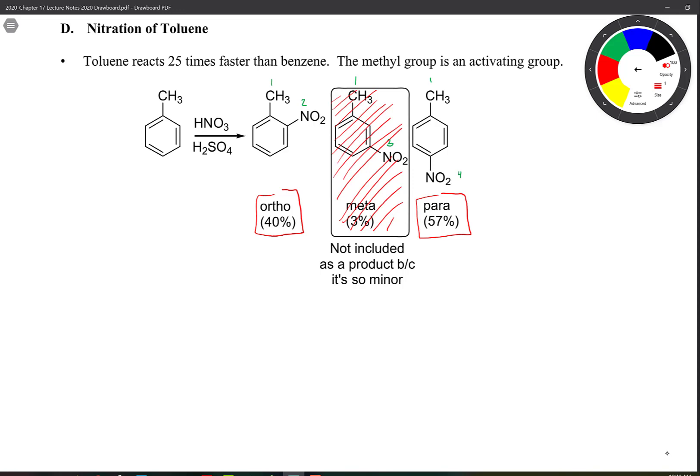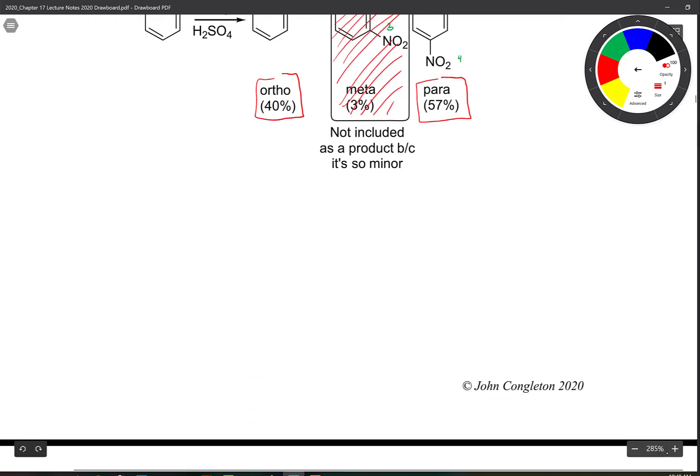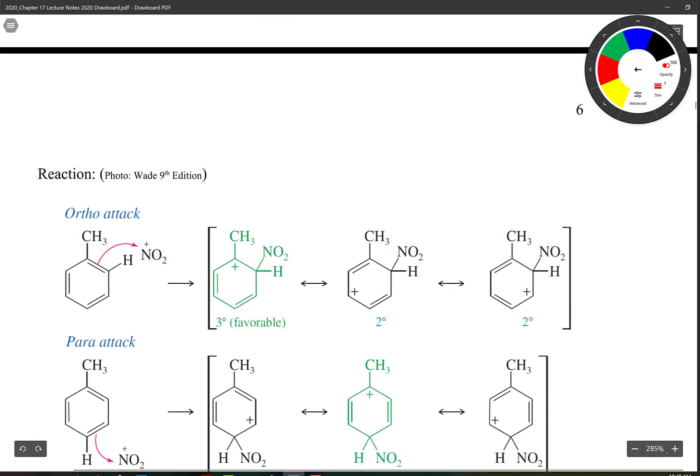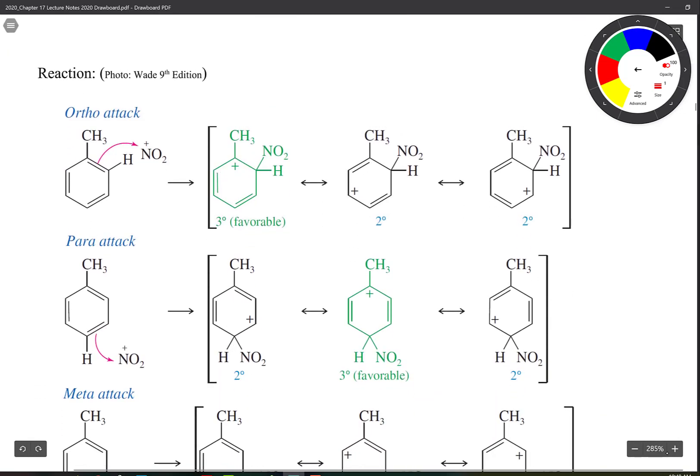The reason why that's the case can be seen when we look at the mechanism. Let's take a look at the ortho attack. For the ortho attack, remember we're grabbing a hold of that nitrogen. NO2 is on our ring. You have your plus charge at this position.